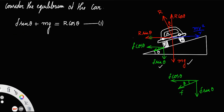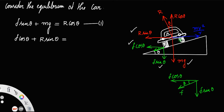Now consider the horizontal equilibrium of the car. The horizontal forces acting are R sin theta and f cos theta. Therefore, f cos theta + R sin theta equals the net centripetal force, which is mv² / r. Let us call this equation number two.